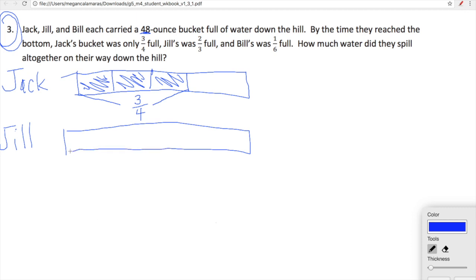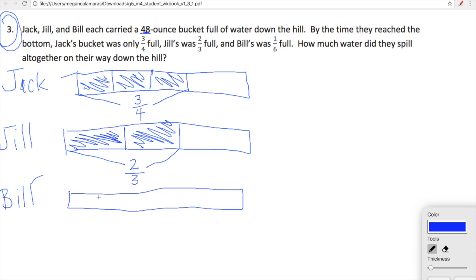Let's check out what situation Jill found herself in at the bottom of the hill. Jill's bucket at the bottom of her journey was two-thirds of the way full. So Jill had two-thirds of her bucket full. And then Bill. Bill's bucket was one-sixth of the way full. The blue indicates how much water they had left at the bottom of the hill. The question that we are asking is how much did they spill?